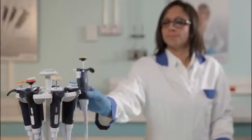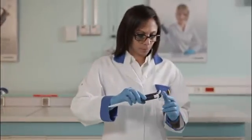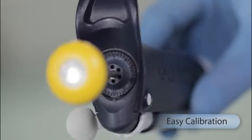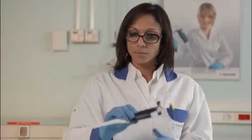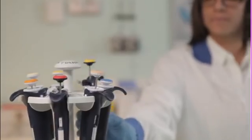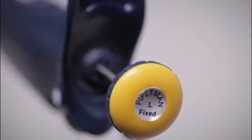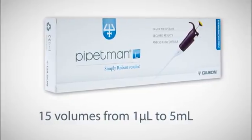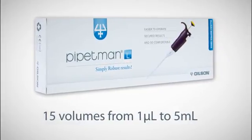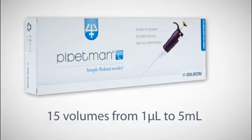Take advantage of the comfort of the PipetMan L with fixed volume pipettes. For specific liquids, the PipetMan L fixed can be readjusted from its graduated cover to perform the same accuracy. The PipetMan L is available in fifteen fixed models, covering a range of volume from one microliter to five milliliters.